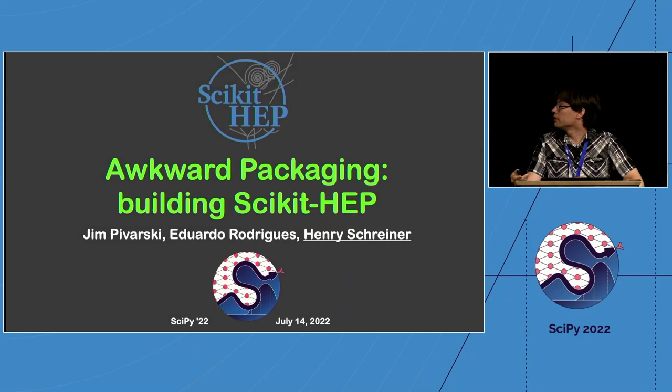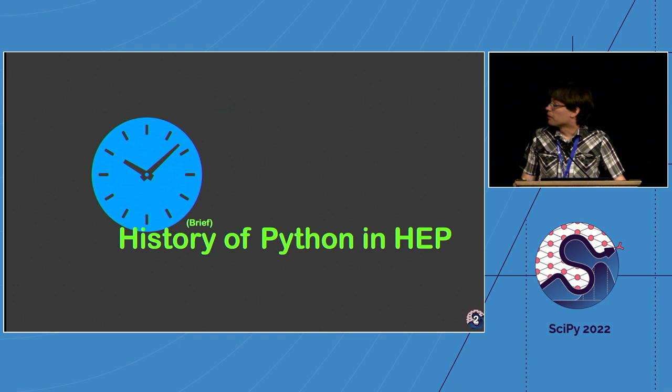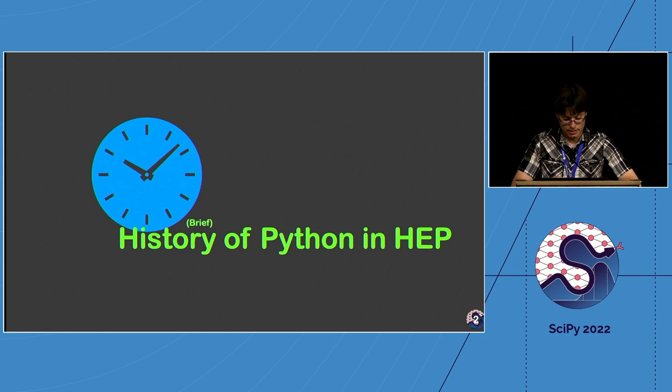Today I'll be talking about the history of scikit-hep, how this organization started, and how we've come together to ship about 30 or 40 different Python packages for a variety of different needs. I'm going to start talking about HEP itself — that's high energy physics — and talk a little bit about the history of Python and how it was used.